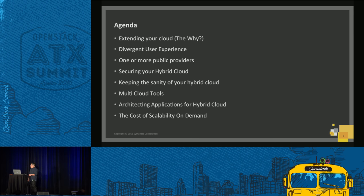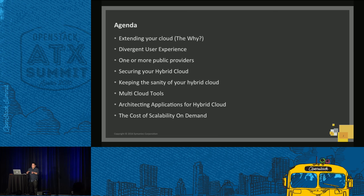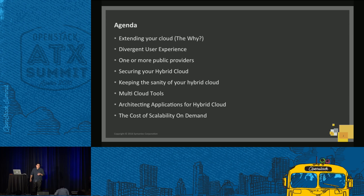After that, we're going to talk about architecting applications for hybrid cloud — which type of workloads should be where, what types of applications are good for certain clouds. In our case, we're not running only Linux or only Tomcat servers; we have a huge amount of Windows-based servers. So it really depends on where you're going to drop things, whether you have to re-architect your application or just drop it in place. And at the end, we're going to talk about the cost of scalability on demand — how your workloads need to be running and what's going to be running where from a cost perspective. So that's the agenda.